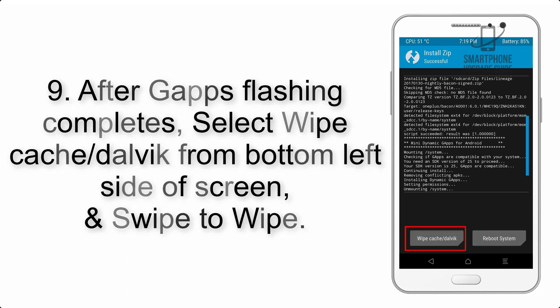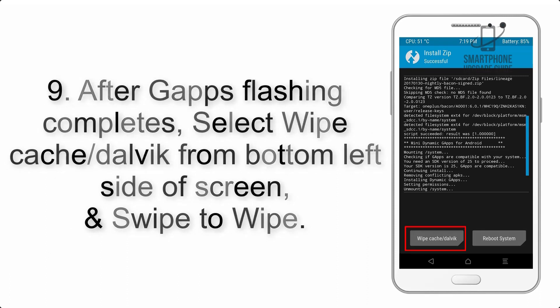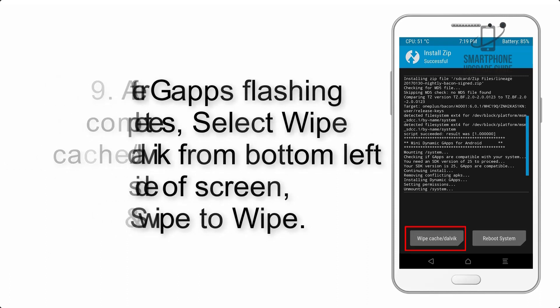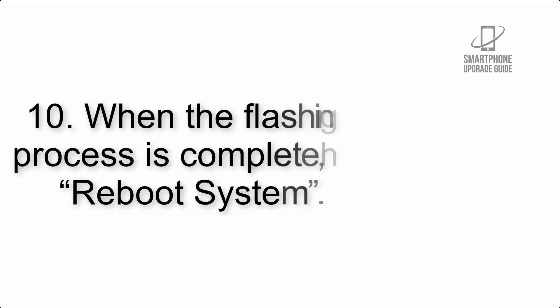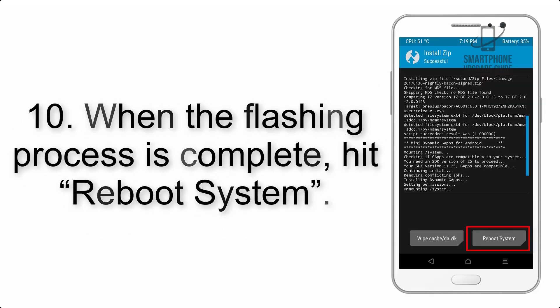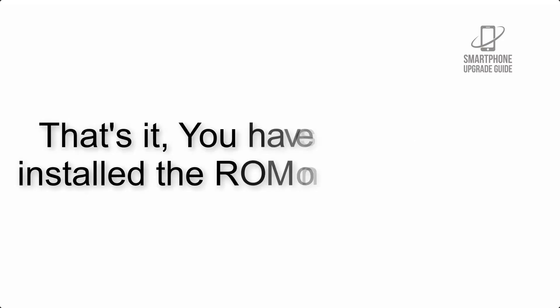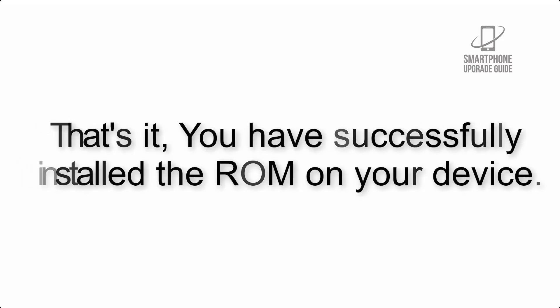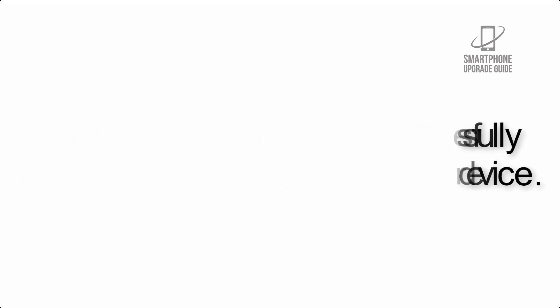Step 9: After GApps flashing completes, select Wipe Cache and Dalvik from the bottom left side of the screen and swipe to wipe. Step 10: When the flashing process is complete, hit Reboot System. That's it — you have successfully installed the ROM on your device.